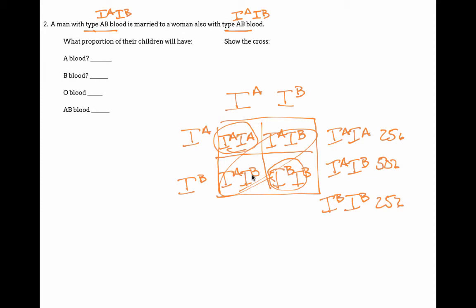Okay, so then you have to translate that into what their blood type would actually be. So if I have I^A I^A, I'm going to have type A blood. So that's going to be 25%. If I have I^B I^B, that's type B blood, 25%. There's no type O blood. And then I^A I^B is going to be type AB blood.